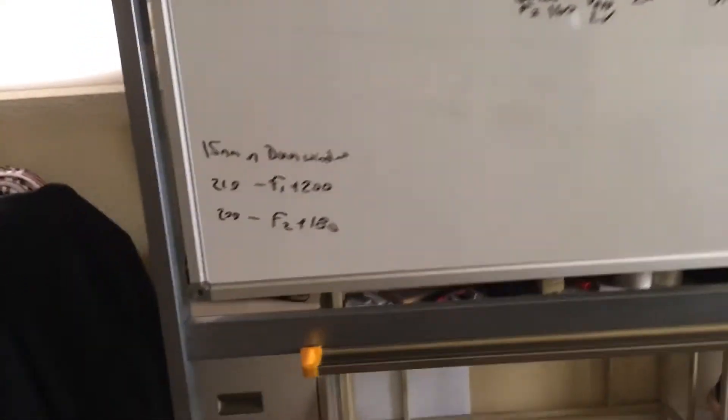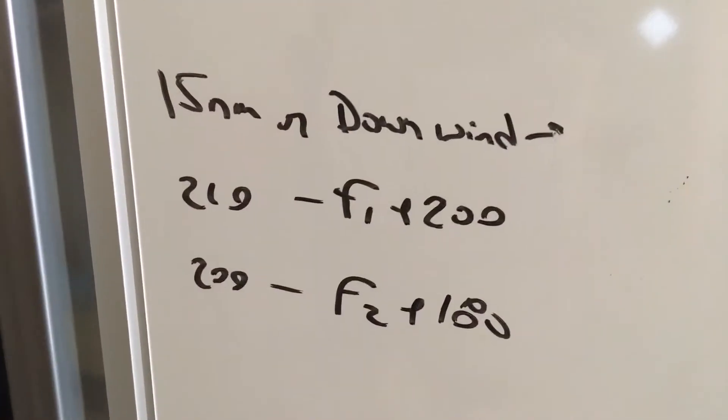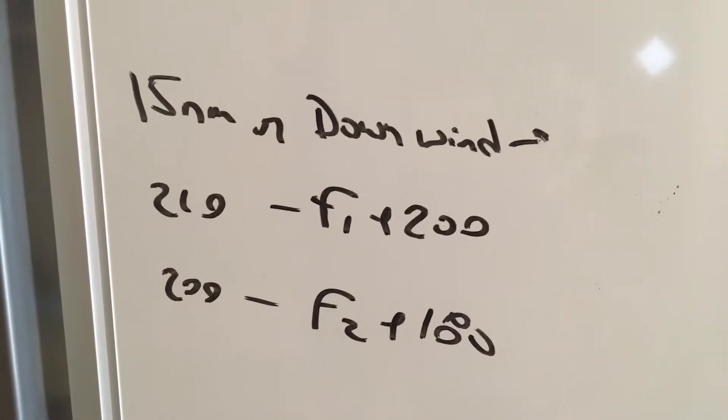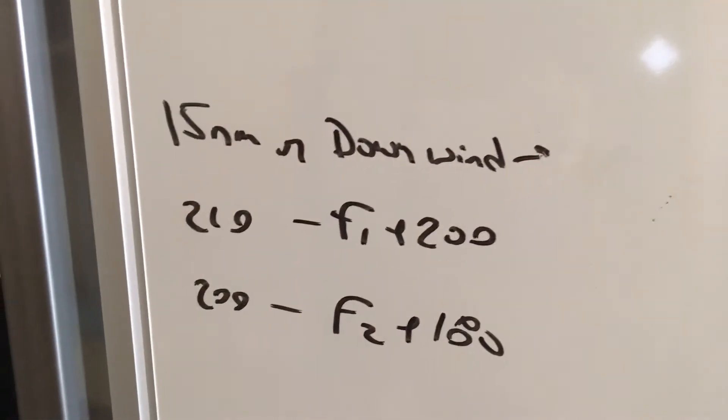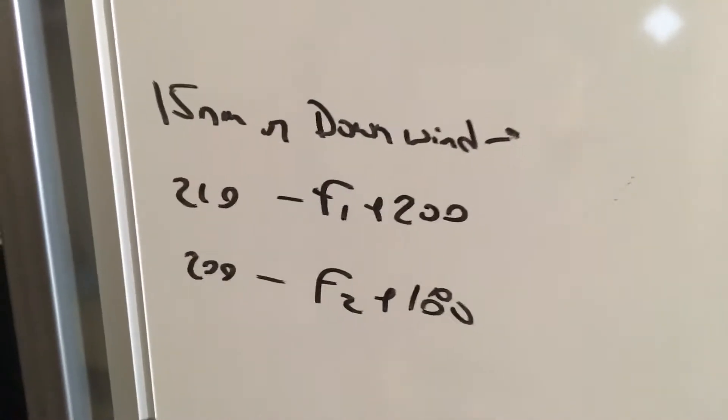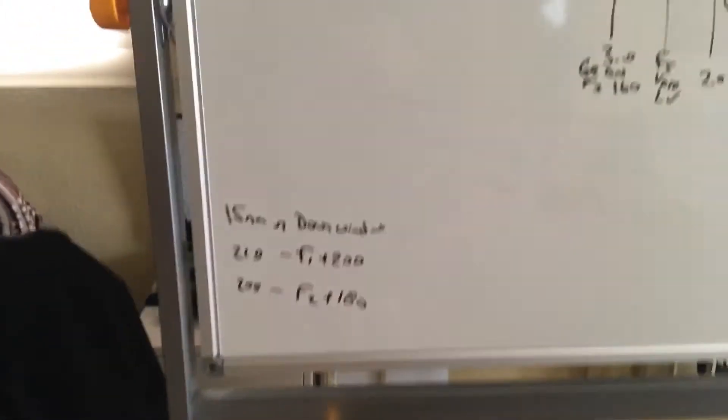To help sort things out and make life a little bit easier, when you're within 15 miles or downwind, slow to 210 knots. At 210, flaps 1, 200. At 200 knots, flaps 2, 180. That'll help slow things down while you're learning this approach.